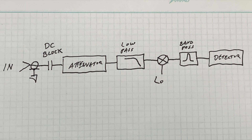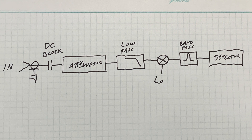I took a cursory look at the block diagram of the TinySA Ultra to see what's going on. Let's first talk about a generic spectrum analyzer. Some people have asked me questions about what's the difference between a software-defined radio and a spectrum analyzer, and most of it comes down to filtering. Here is a typical block diagram for a spectrum analyzer.